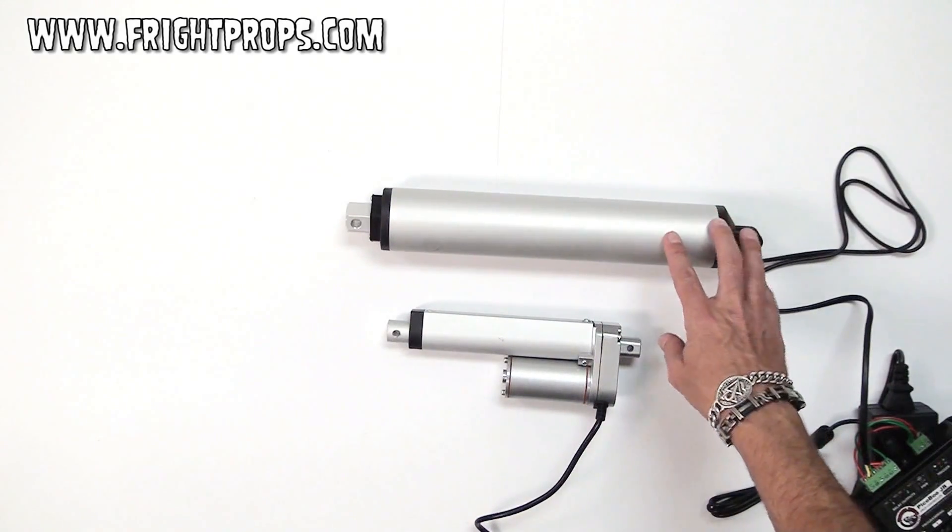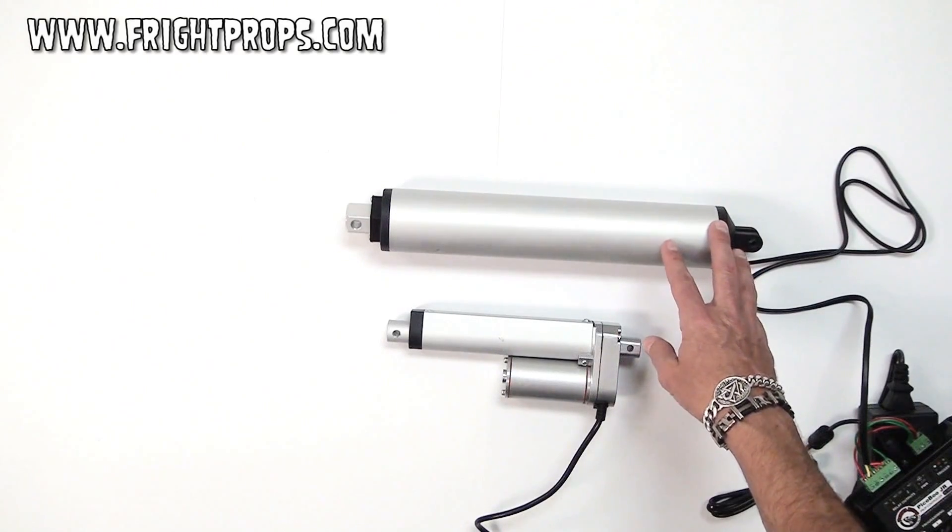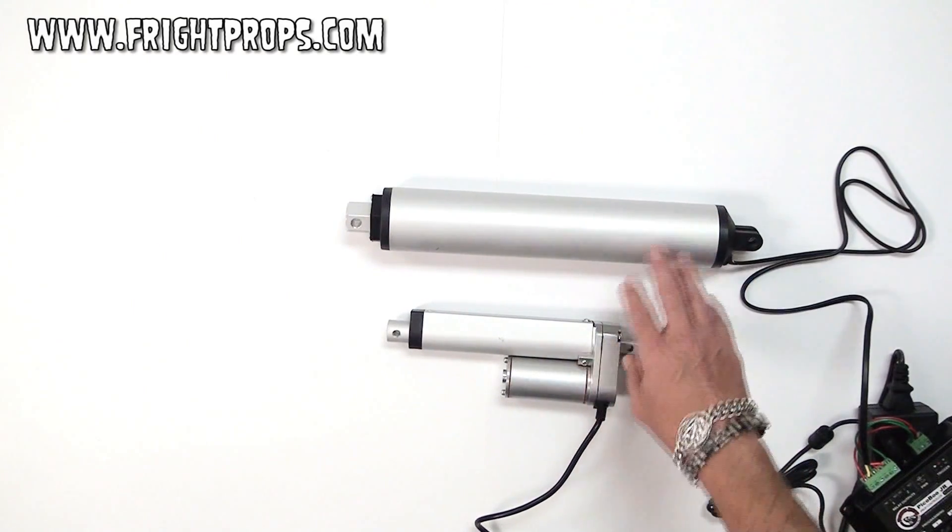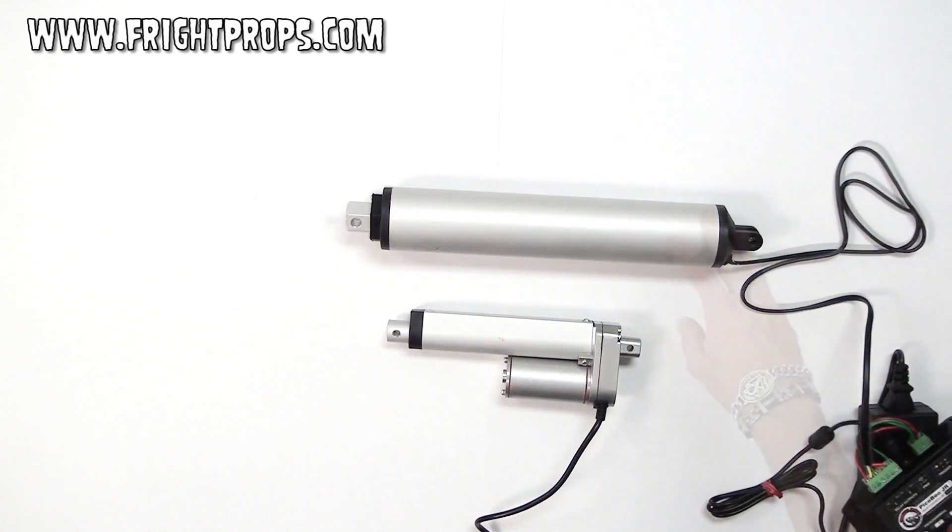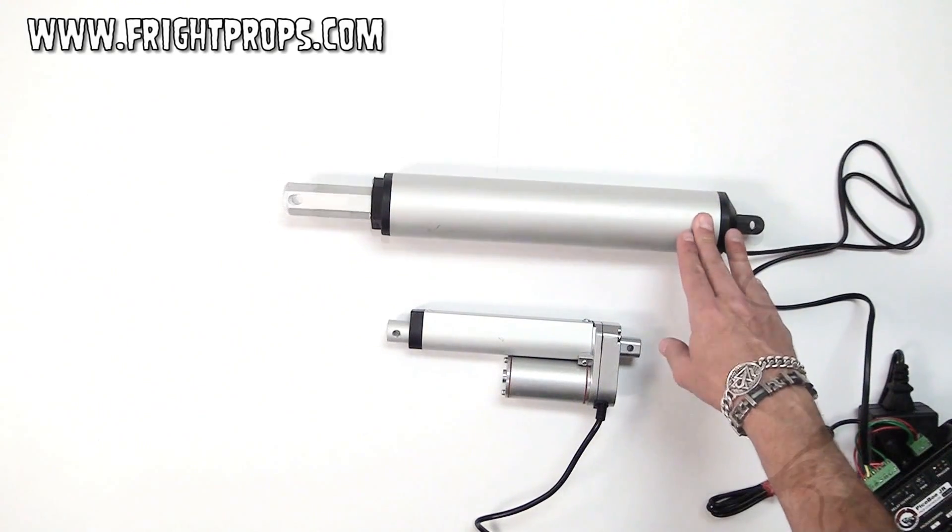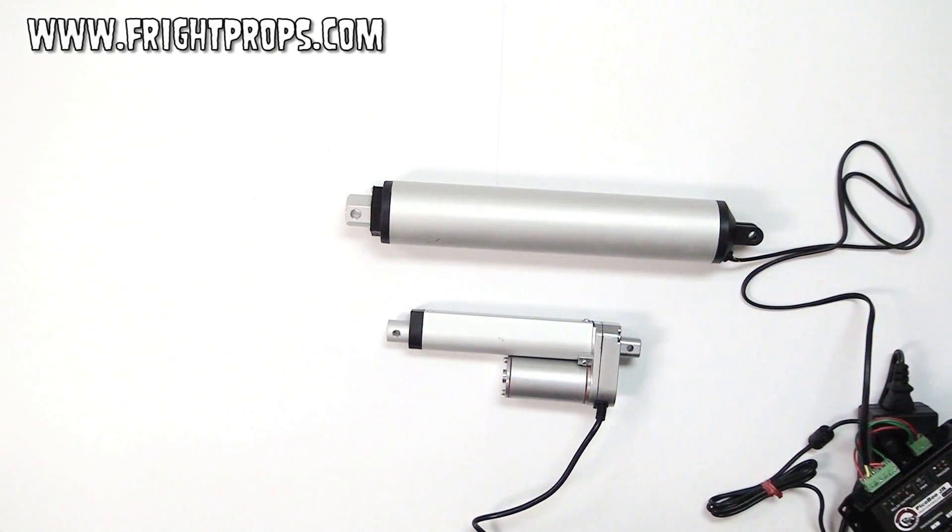Another factor when selecting the actuator to use is the stroke. These are both four inch stroke actuators, which means the shaft moves out a total of four inches. We carry stroke sizes from one inch up to twenty-four inches.